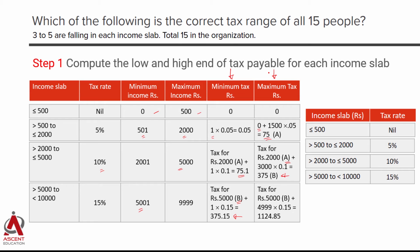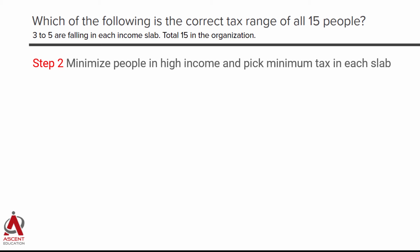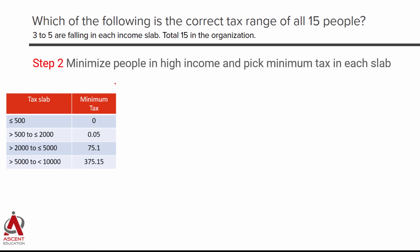Step 2: find how low the total tax can be for all 15. To minimize, put the maximum people in low income groups and minimum in high income groups. Put exactly 3 in each of the two highest income slabs (using 6 people), leaving 9 more split as 4 in the 500–2000 slab and 5 in the under-500 slab. Then pick the minimum tax for each slab.